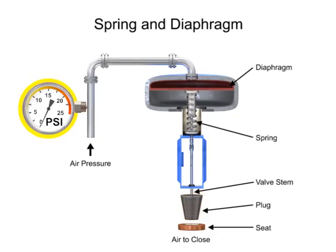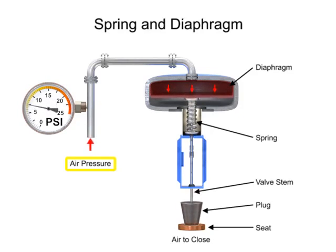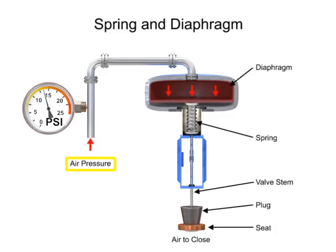A 15 PSI pneumatic signal enters the housing at the top of the actuator. As pressure is exerted on the diaphragm, a downward force is applied against the spring which moves the restrictor. The diaphragm moves until it creates an equal but opposing force against the spring, at which time the motion stops as the plug meets the valve seat.